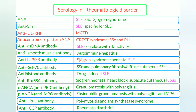Hello. Our subject today is short, important, and basic for all students and doctors in medicine: serology and rheumatological disease. The first antibody is ANA, anti-nuclear antibody, seen in SLE, systemic sclerosis, and Sjögren's syndrome.